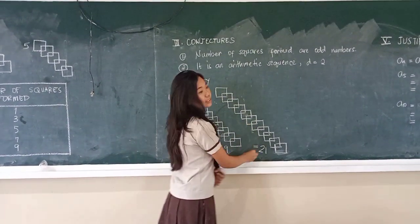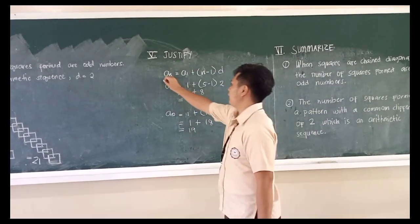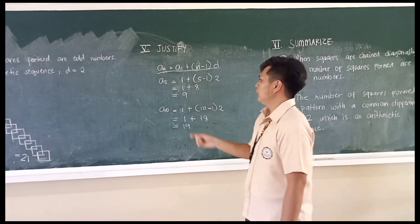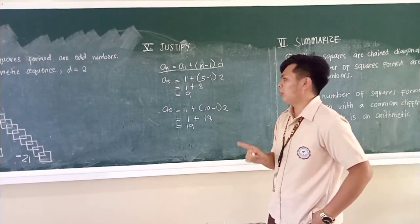To justify the conjecture, we use the formula of the arithmetic sequence where n is the number of squares and d is the common difference.